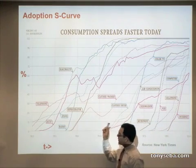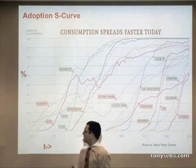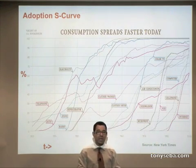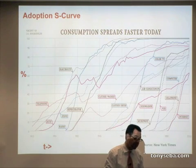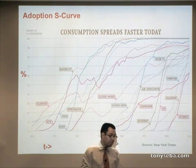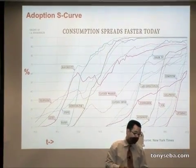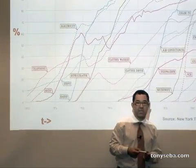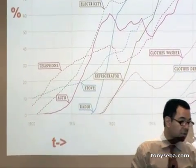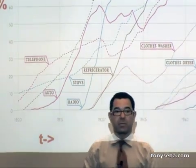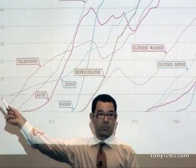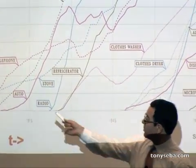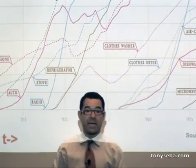There are so many different interesting innovations from 1900 on. For instance, look at the telephone — it took the telephone from 1900 to about 1970, roughly 70 years, to get to 90% of the market. That's a long adoption curve.